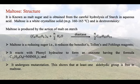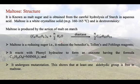Maltose is produced by the action of malt on starch. When starch, that is (C6H10O5)n, plus n/2 H2O, undergoes hydrolysis in the presence of diastase, it gives us C12H22O11, that is maltose.